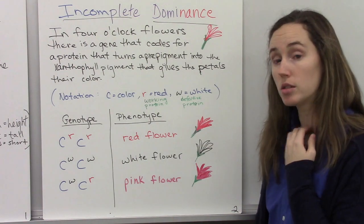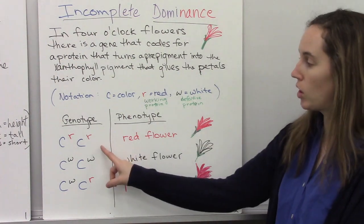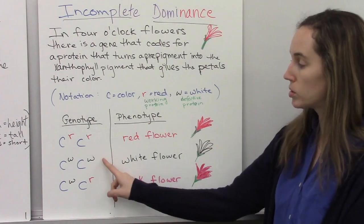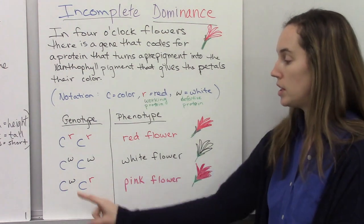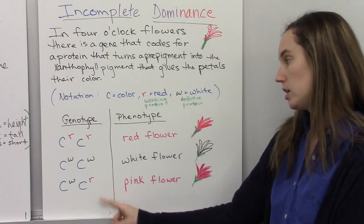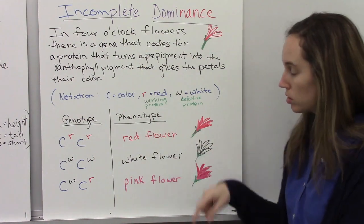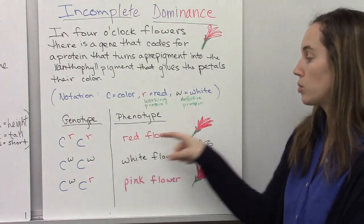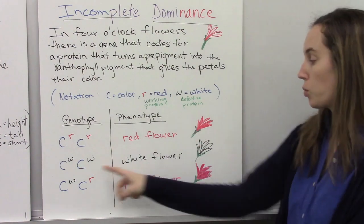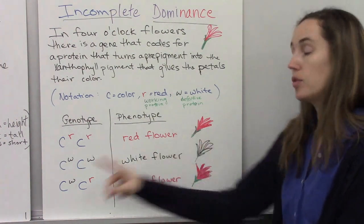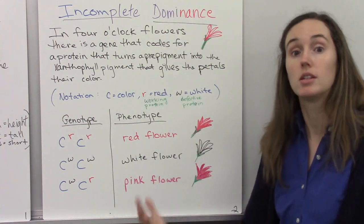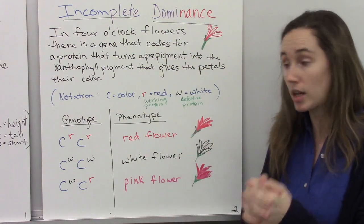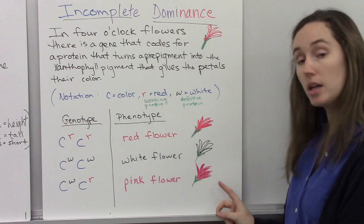So our three genotypes: we can be homozygous for red, homozygous for white, or heterozygous - one of each, a white allele and a red allele. And the phenotypes from those: homozygous red, you get a red flower. Homozygous white, you get a white flower. And if you're a heterozygote, in incomplete dominance, the heterozygote is an intermediate of the two homozygotes. So that will give you a pink flower.